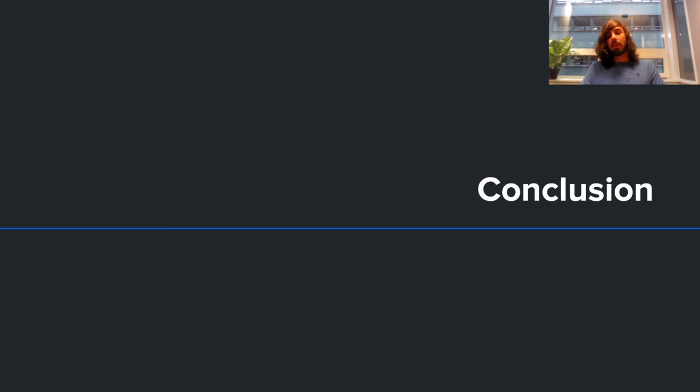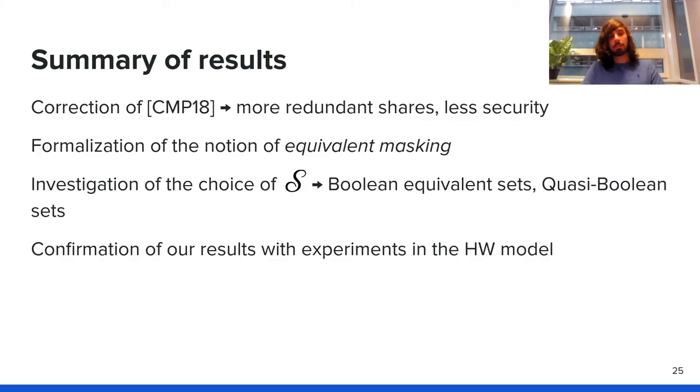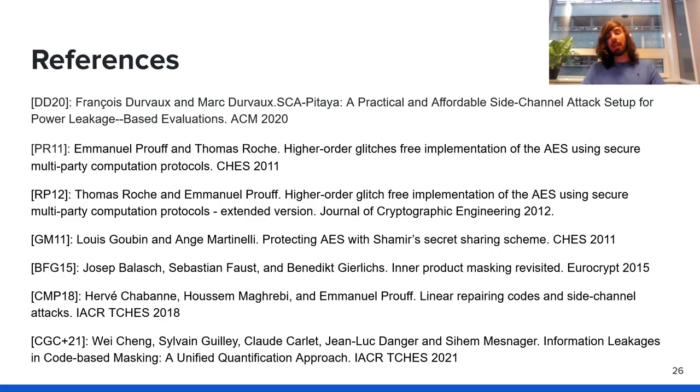I've come to the end of my talk, and I'm going to conclude by summarizing the results that we got. We corrected a previous paper published at CHES by Shaban, Maghrebi, and Prouff. More redundant shares always lead to less security. This means there is a trade-off when you use polynomial masking between defending yourself against fault attackers by introducing redundant shares and making yourself more vulnerable to passive attackers who use those redundant shares to mount more powerful attacks. We formalized the notion of equivalent masking using code theory, and we investigated the choice of points using coding theory as well. We found two sets that should be avoided when doing implementations: Boolean equivalent sets, which lead to polynomial masking being equivalent to Boolean masking, and quasi-Boolean sets who have an atypical leakage profile. All our results are confirmed with experiments in a simulation-based hamming weight model. Here are all the references that I used in my talk, and thank you for listening. Have a good day.